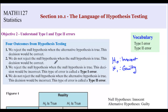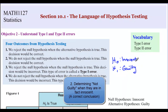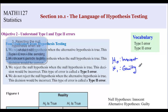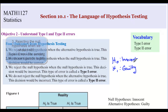Our second possible outcome: we do not reject the null hypothesis when the null hypothesis is true — we fail to reject, we cannot prove guilt. This is when someone is declared not guilty and they were in fact innocent. That's a correct decision. Third: we reject the null hypothesis when the null hypothesis is actually true — we're saying they're guilty when they were actually innocent. That's sending an innocent person to jail — that's a type one error.